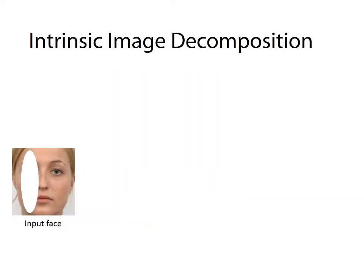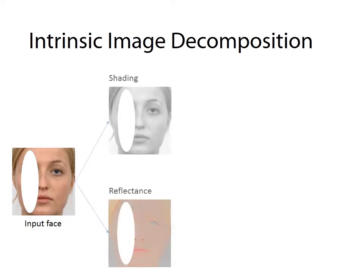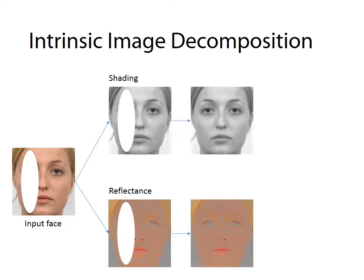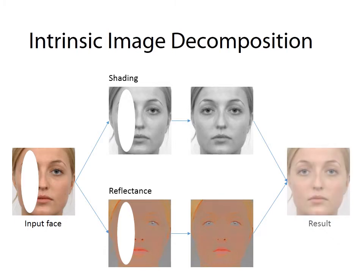To separate the variation caused by shading from that caused by reflectance, we apply our inpainting approach separately on the shading and reflectance images attained by intrinsic image decomposition. The inpainted images are then combined to form a final output.